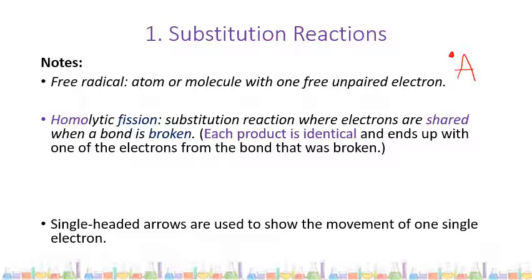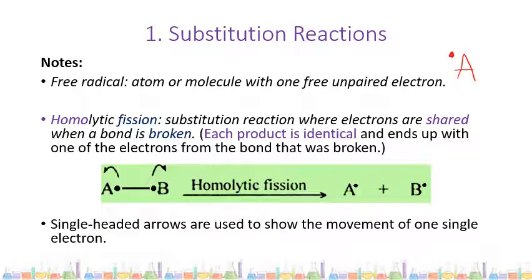Homolytic fission is a type of bond breaking where electrons are shared equally when a bond is broken, so each product ends up with one of the electrons from the broken bond. Here we can see that molecule AB has been split up into two free radicals, and each element A and B has taken one electron from the bond. The single-headed arrows shown here are used to indicate the movement of one single electron.